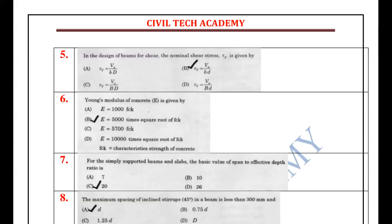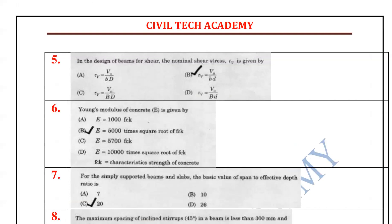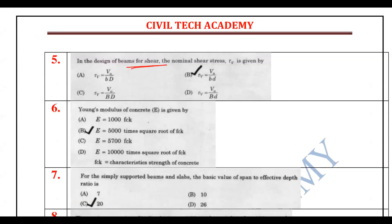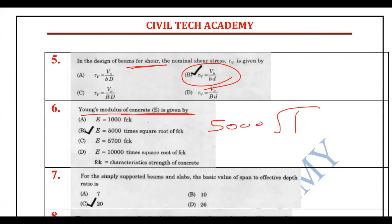For beam design in shear, the nominal shear stress is given by VU divided by BD. Next, the Young's modulus of concrete is 5000 times the square root of FCK.